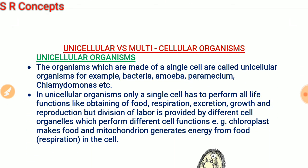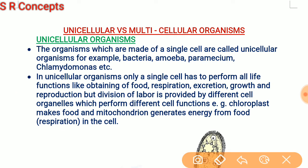The next topic is unicellular versus multicellular organisms. There are two types of organisms: unicellular organisms, whose body is made up of only one cell, and multicellular organisms, whose body has many cells. Examples of unicellular organisms are bacteria, amoeba, and paramecium. Unicellular organisms are single cells capable of independent existence.